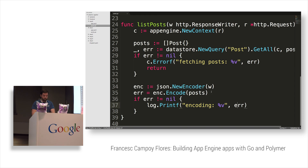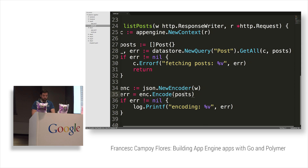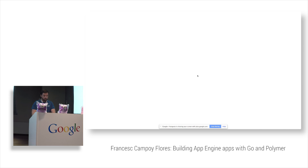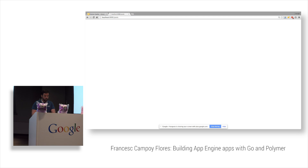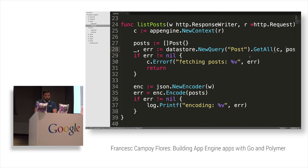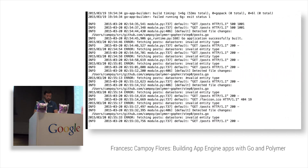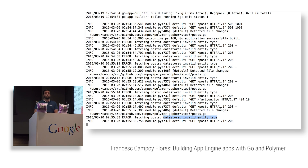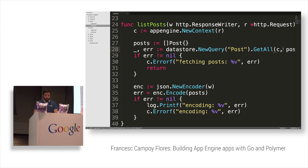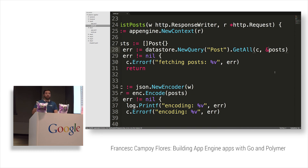There's an invalid data type error because I'm passing a list but want to modify it — if you want to modify something in Go, you have to pass a pointer. So we pass a pointer to the list. That way the Datastore can modify that list and add all the posts. Now we get an empty list — we don't have anything in it yet.